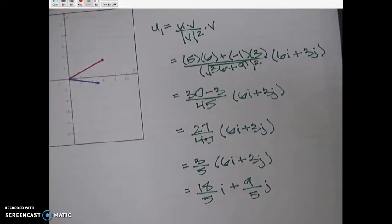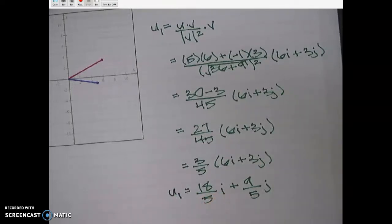So you can see that I kind of went offline there and did the work. I didn't want you to have to watch me write all of the steps out, but there's the dot product over the magnitude of v squared times the magnitude of v, and then I just kept working it, and then here's my ending answer for u sub 1.